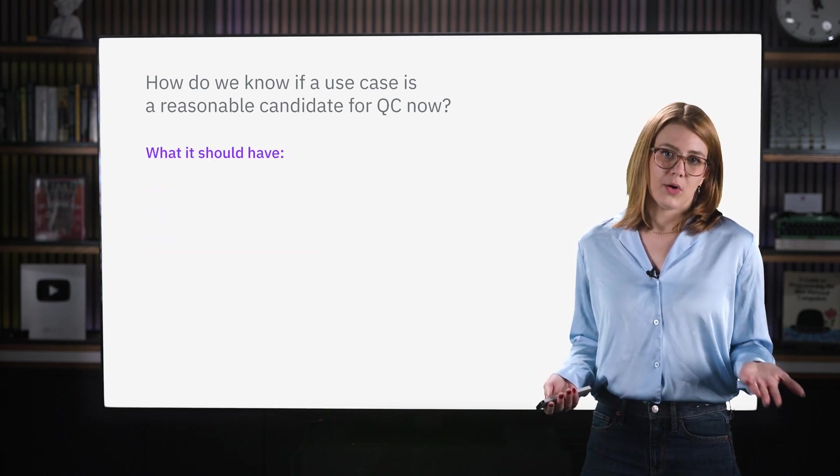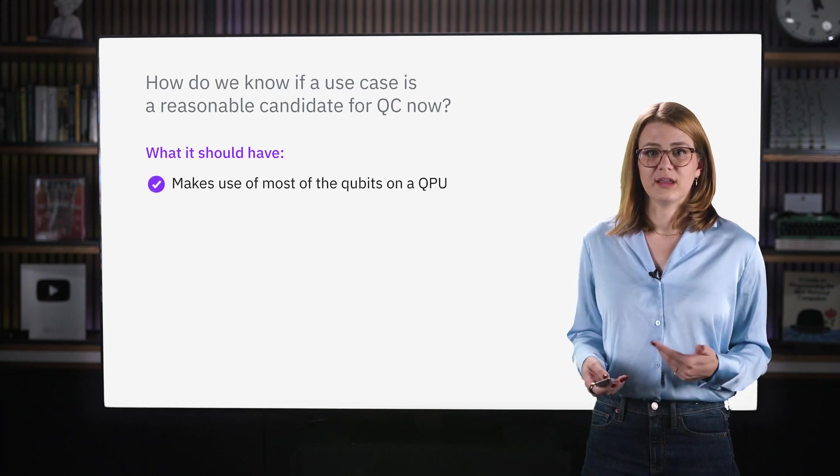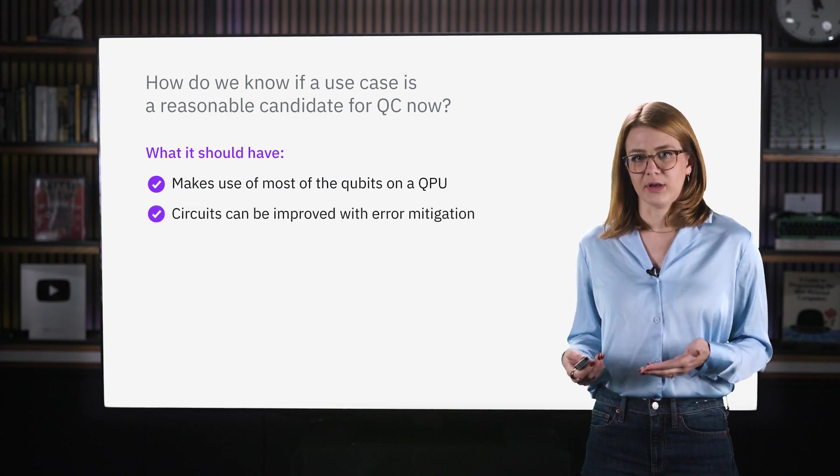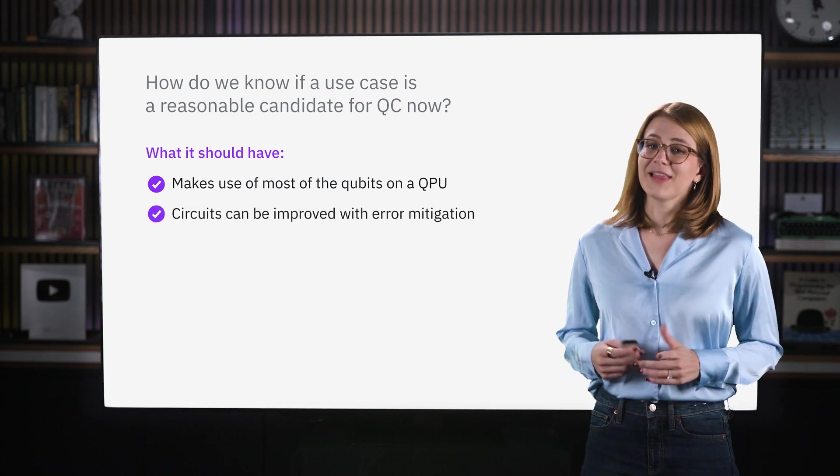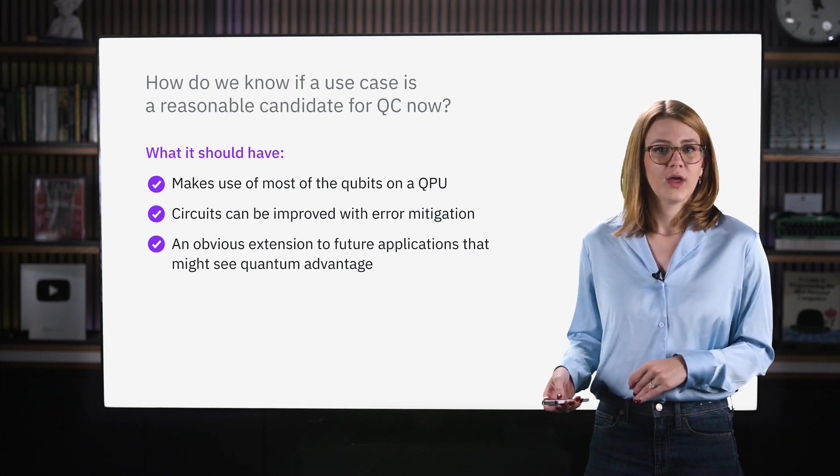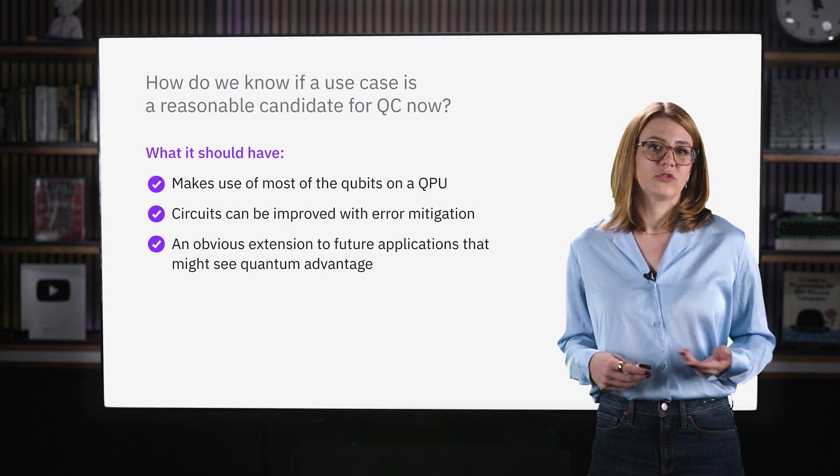What we should look for, however, are experiments that make use of most of the qubits available on any given QPU. We have also emphasized the importance of error mitigation and suppression. And lastly, there should be an obvious extension to future applications that would be important for society and that we could see eventually leading to quantum advantage.